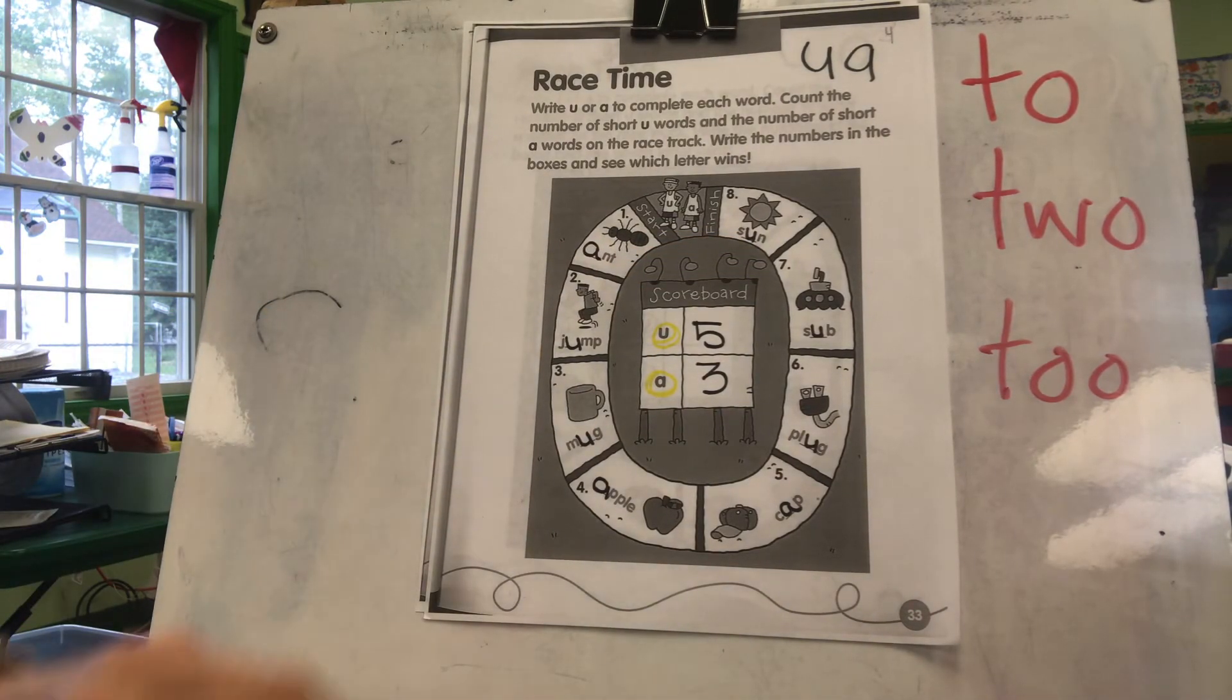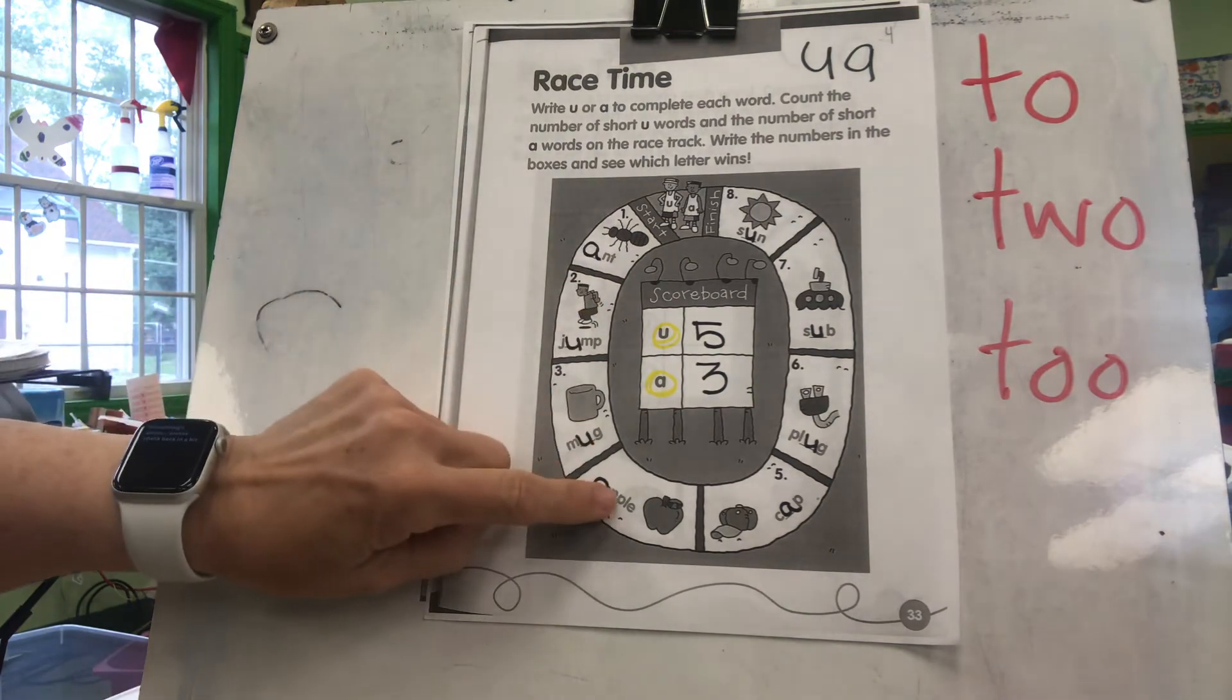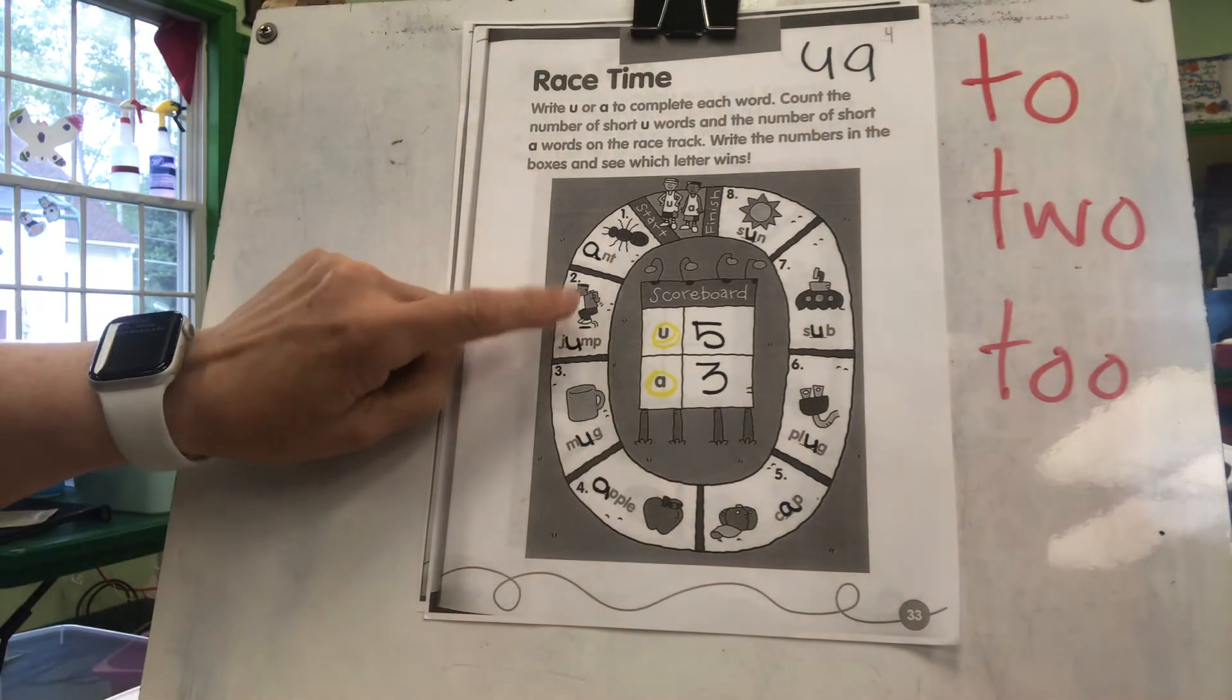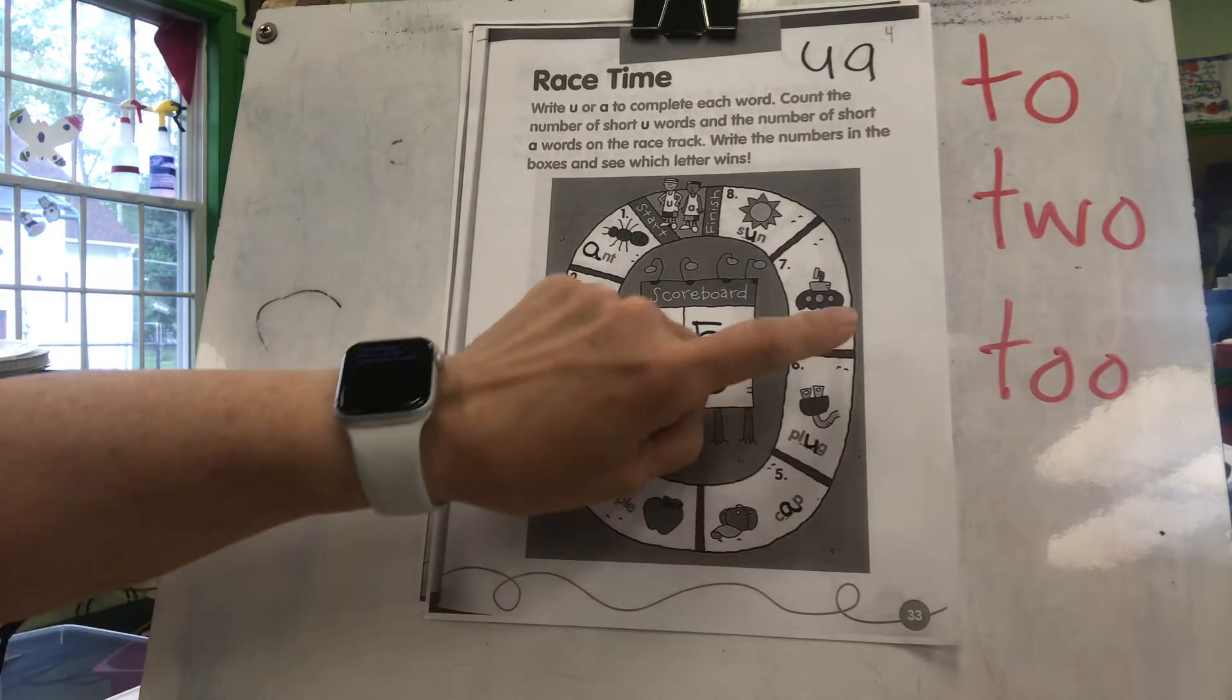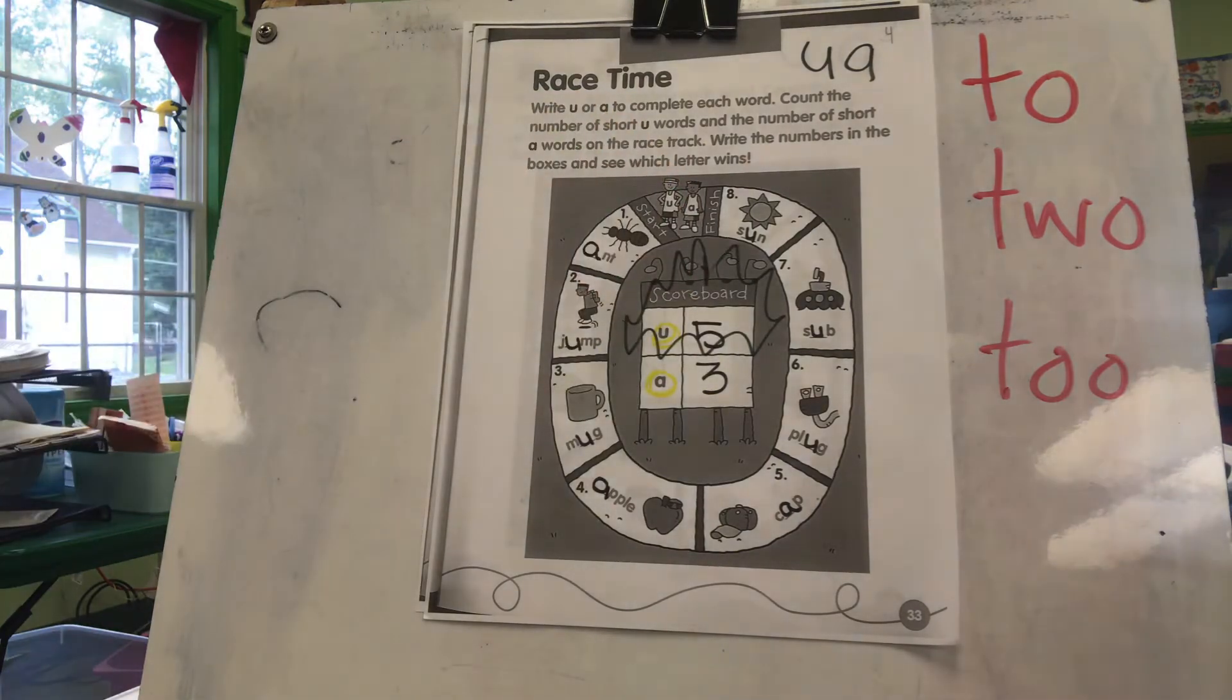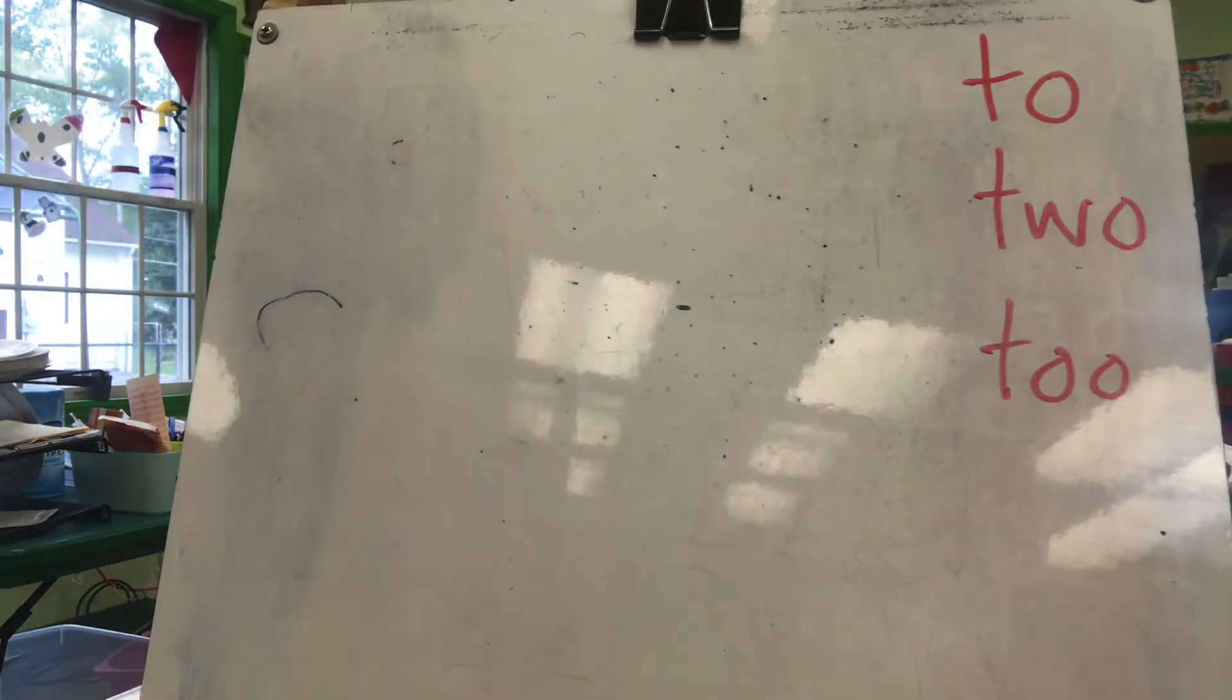So let's count. Who's the winner? The U or the A? Here's the A's. One, two, three. Three A's. And here's the U's. One, two, three, four, five. And who's the winner? Woo-hoo! The U's for Umbrella are the winner today. That was kind of fun, I say.